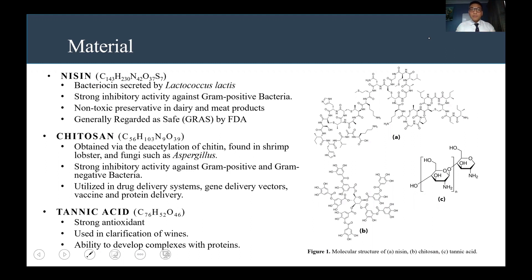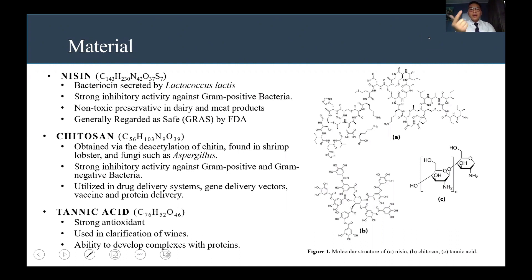In order to address that, we wanted to encapsulate it in chitosan. Chitosan is obtained via the deacetylation of chitin found in shrimp, lobster, and fungi such as Aspergillus. It has strong inhibitory activity against gram-positive and gram-negative bacteria, and it's utilized in drug delivery systems, gene delivery vectors, vaccine, and protein delivery.